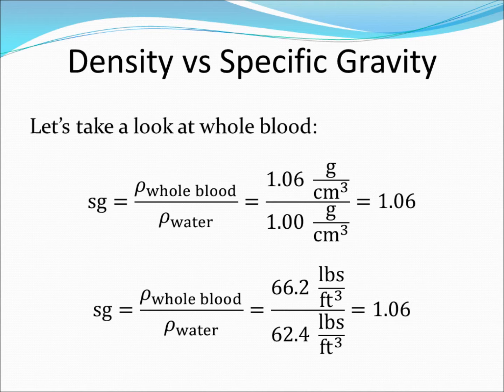Now let's repeat the calculation using density data in pounds per cubic foot. Notice that these units are technically force per unit volume. However, when I use the density data in pounds per cubic foot for whole blood and water, I still get a value of 1.06. Note, no matter what units are used for the density, the specific gravity value will not change numerically.